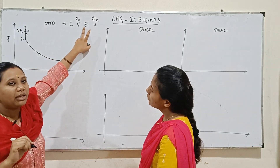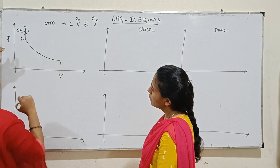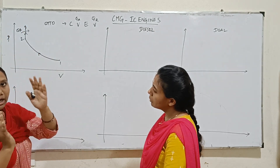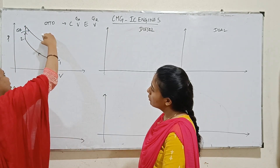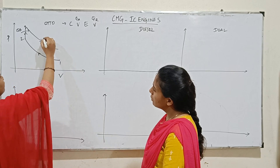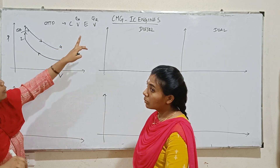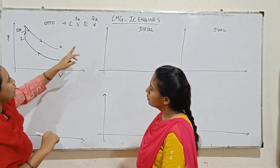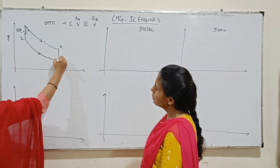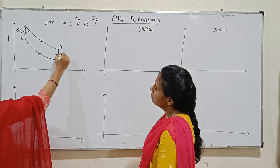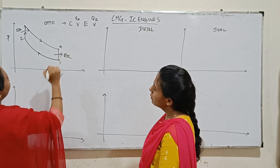As you can see, the isentropic expansion follows — pressure is high and then decreases. This is the 3 to 4 process of expansion. The last process is heat rejection at constant volume.